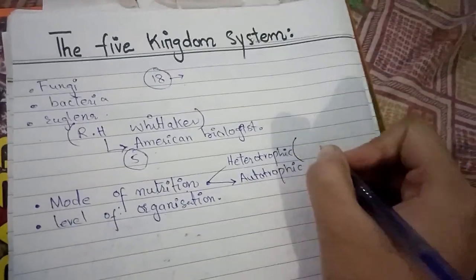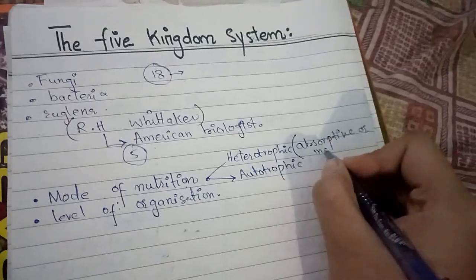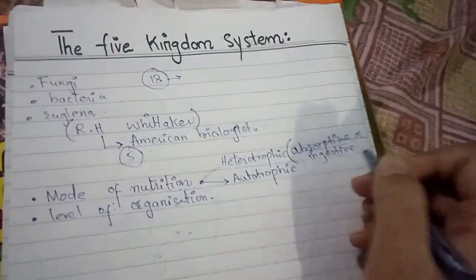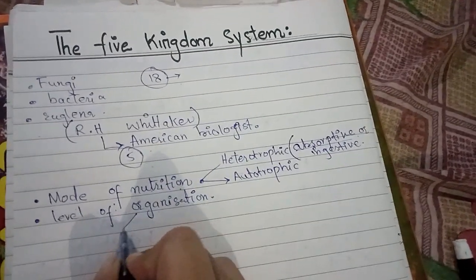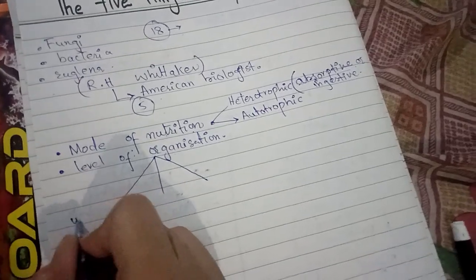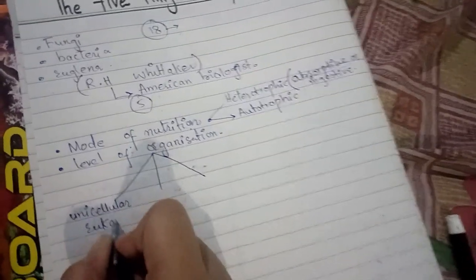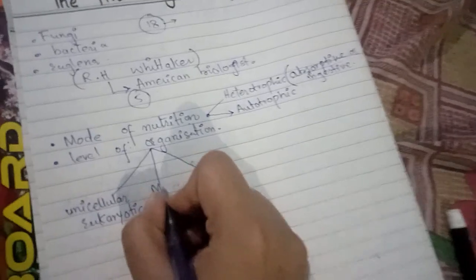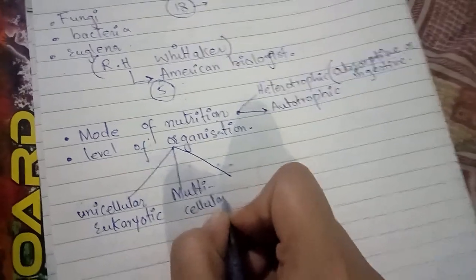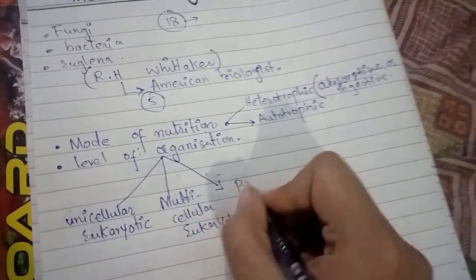Further, they described an absorptive type of organism and an ingestive type. For level of organization, three types were identified: unicellular eukaryotic, multicellular eukaryotic, and prokaryotic.